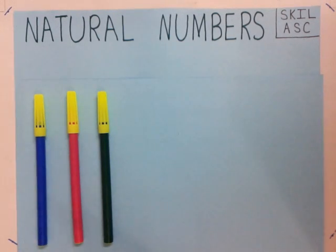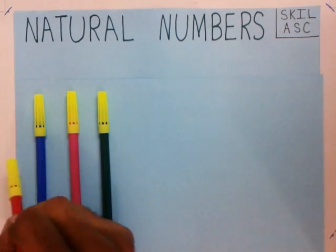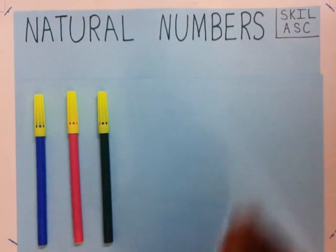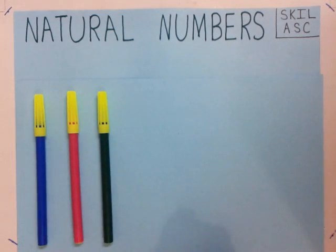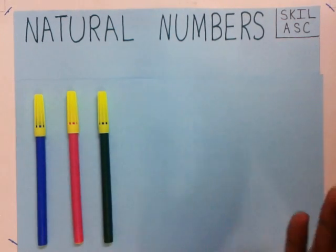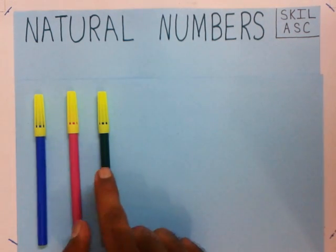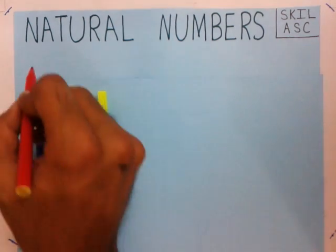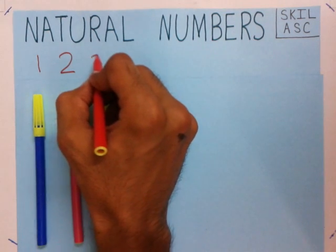Welcome everyone. What are natural numbers? We are going to learn natural numbers with the help of these colors. How many colors can you see? You can see three colors. How do you know this? You count the number of colors as 1, 2, 3. So we write these numbers 1, 2, and 3.